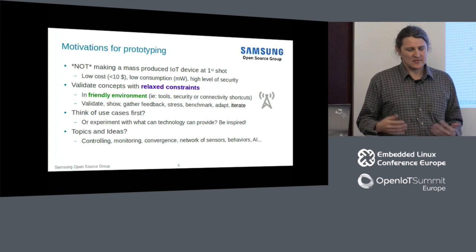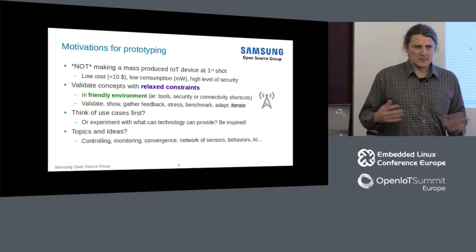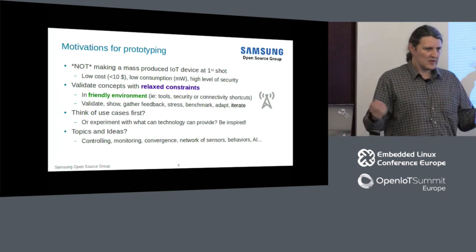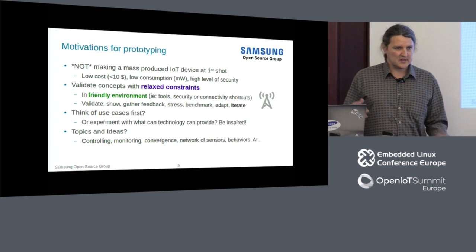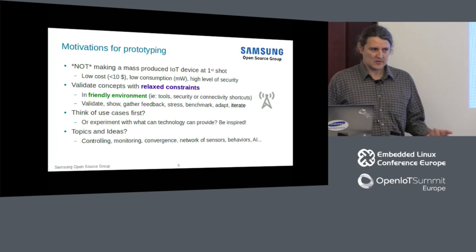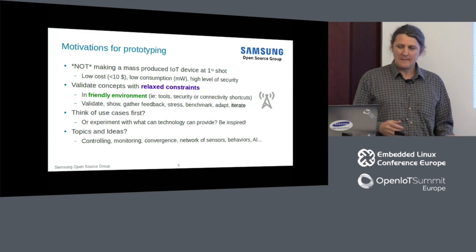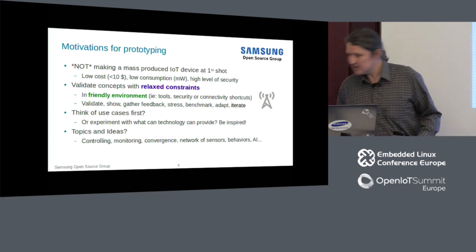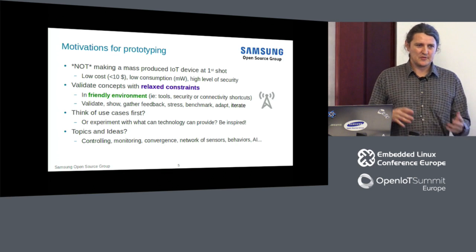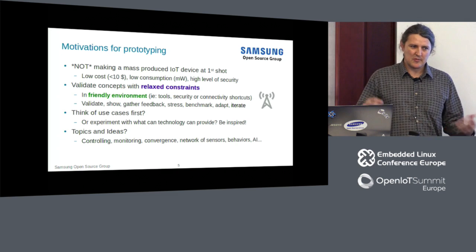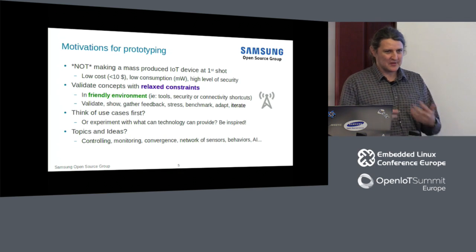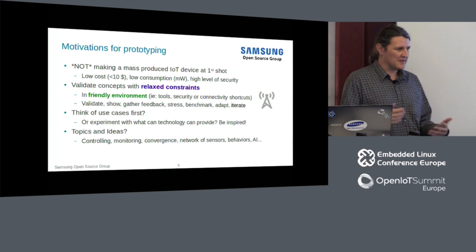Some engineers just want to play with technology to get inspiration and imagine what can be done with it. If you're looking for ideas, everything is possible — you can control devices, do monitoring with sensors, or establish links between different domains like phones and industrial machines. It's not unusual to have a phone interact with an industrial machine. I predict this is just the beginning, and prediction and artificial intelligence will make these systems more efficient.